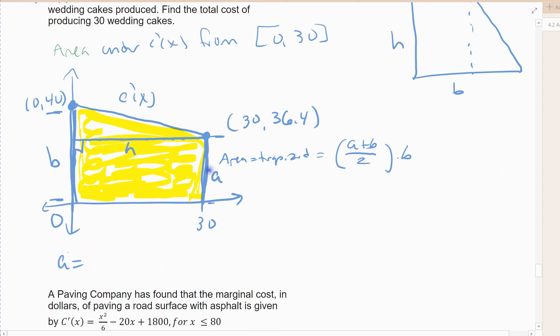All right, so in this case, a would be this distance here. Well, that distance there is the 36.4, right? That's this y value, 36.4. So 36.4. b would go all the way up here. b would be the height 40, this distance 40. h would be the distance between the two. Well, the distance between the two is going from 0 to 30, so h would be 30 in this case. All right, so this distance is the 36.4. This distance is the 40. The height is this distance, which is 30.